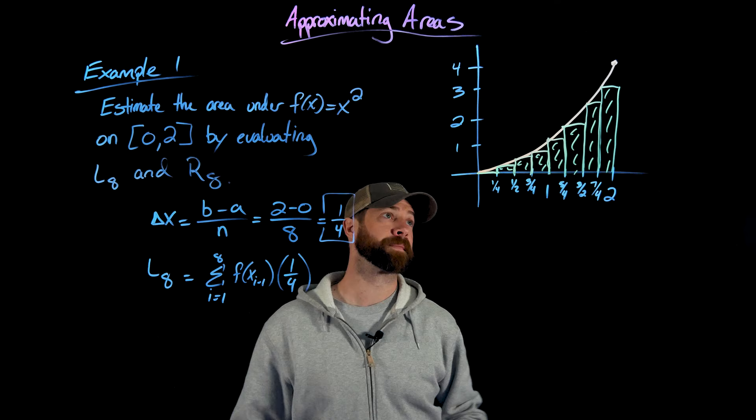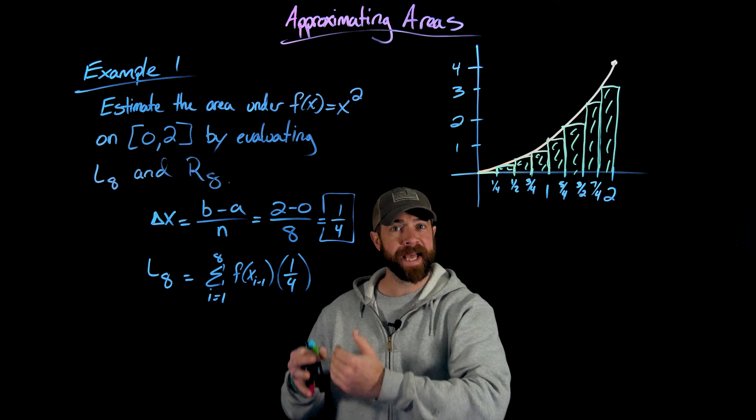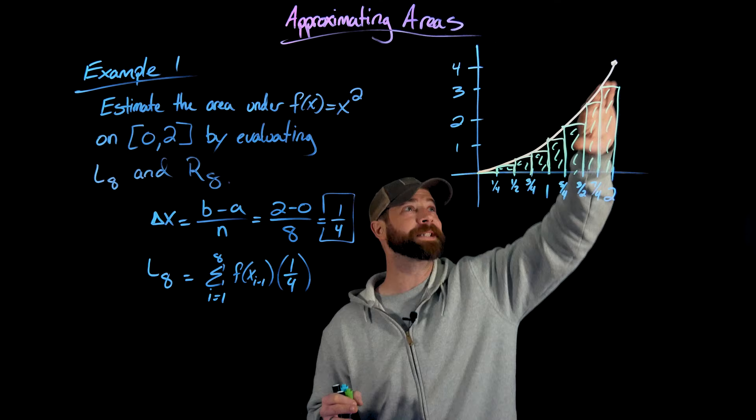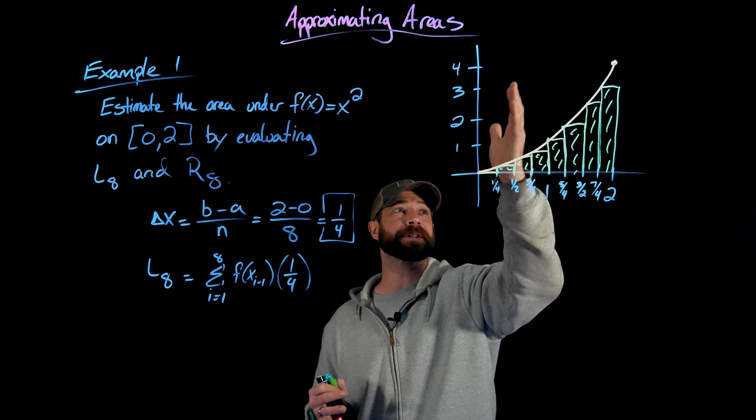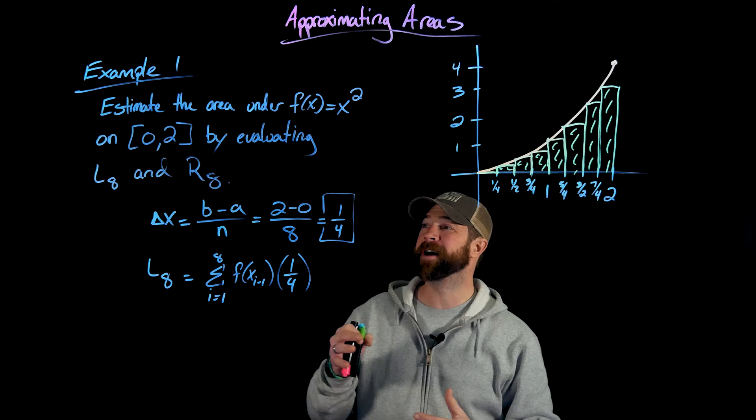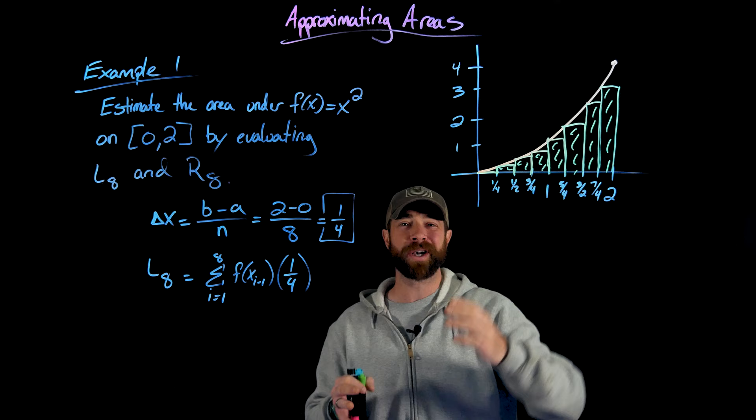These left endpoint rectangles — because x squared is increasing on this interval — will give us a lower bound for the actual area. None of these rectangles extend outside the area; we have little gaps we haven't accounted for. If I chose L16, I'd have smaller rectangles, smaller gaps, and a closer approximation to the actual area. But let's calculate these terms now. We have eight terms, computing the left endpoint function values for each interval and multiplying by 1/4.